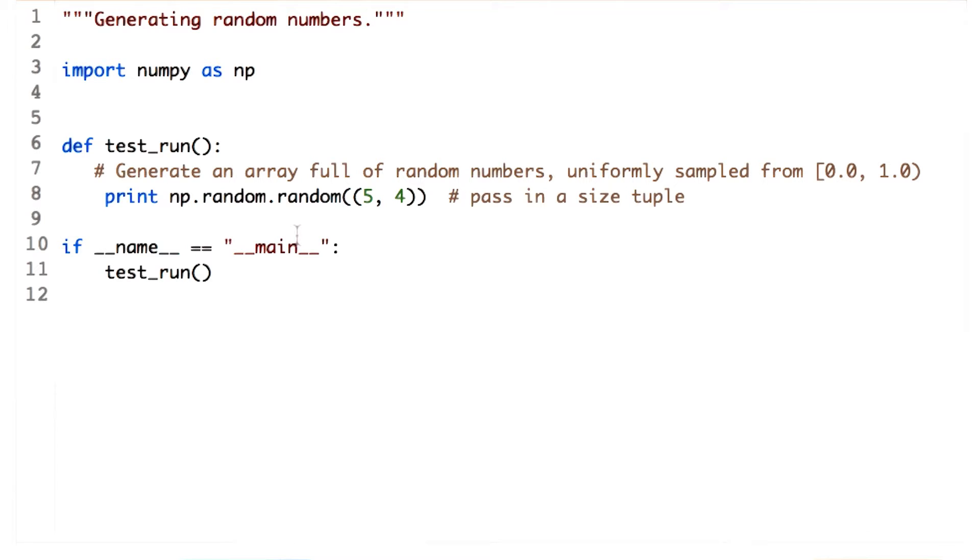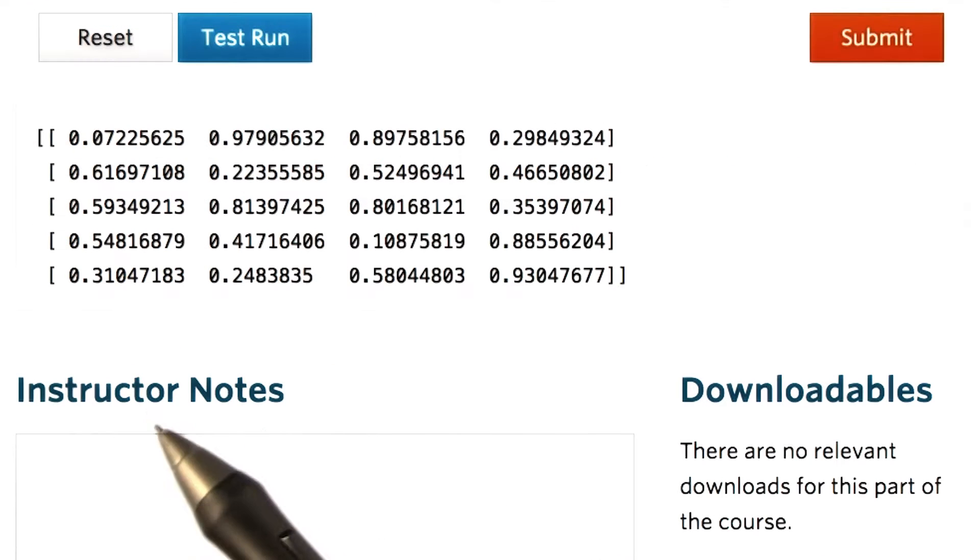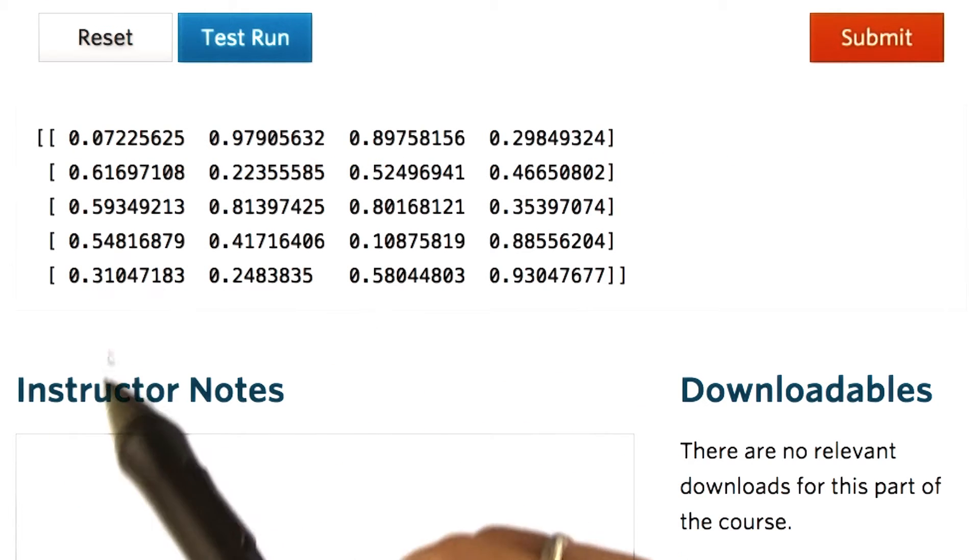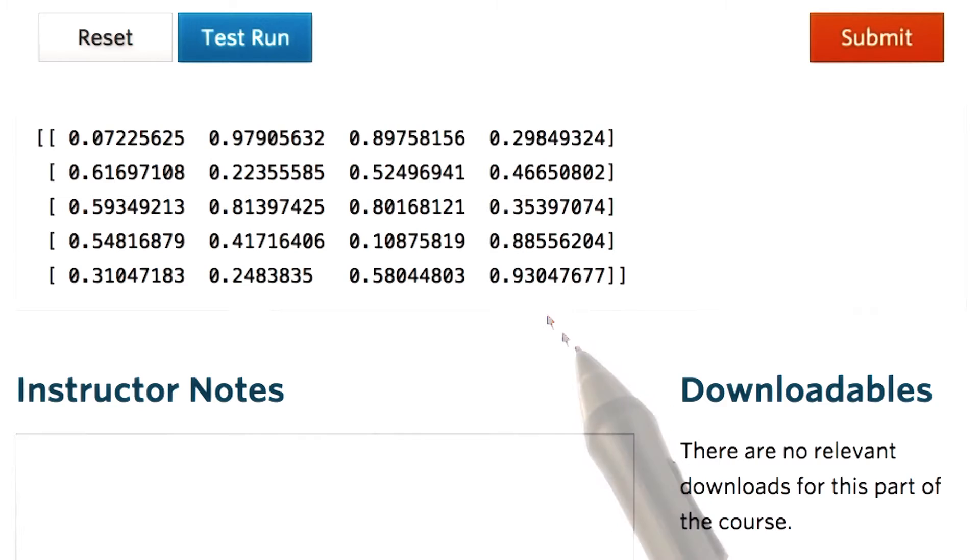More formally, it generates values in the half-open interval 0.0 and 1.0. Let's go ahead and print this. Here is the generated array with 5 rows and 4 columns. Note that we passed the array shape as a tuple.